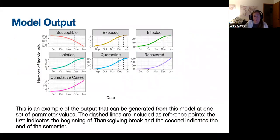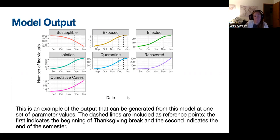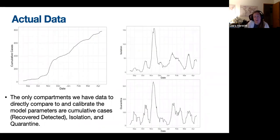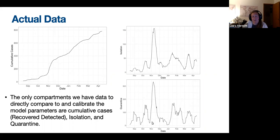This is an example of the output that can be generated from this model at a given set of parameter values, giving you an idea of what these curves look like. I added up all the compartments in each category — for example, all the I compartments go into the infected curve. There are 11 compartments in this model, and only three that we actually have data for: cumulative cases (comparable to the recovered detected compartment), an isolation compartment, and the quarantine. We can use data from these three to get better estimates of our model parameters and run the model into the future to look at different scenarios.